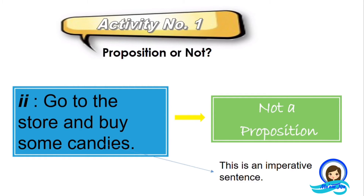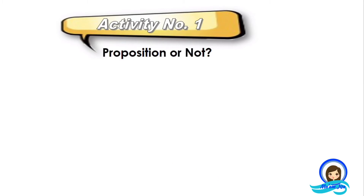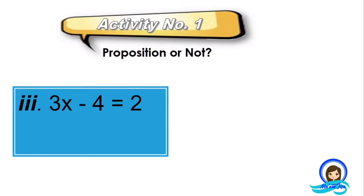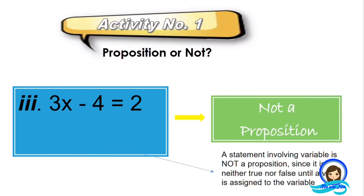Got it? Now, what about this: 3x minus 4 equals 2. This is not a proposition. Why? It's because a statement involving a variable is not a proposition, since it is neither true nor false until a value is assigned to the variable. The indication of the value of the variable x makes the statement a proposition. But in this case, it is not a proposition since there is no assigned value to the variable.